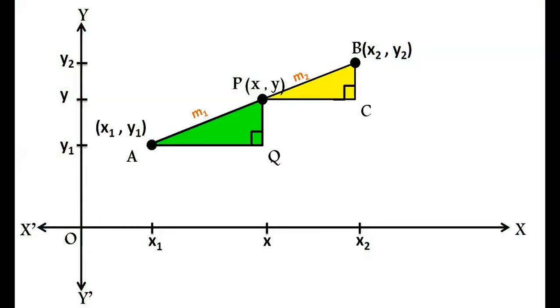Here we have triangles PAQ and BPC. In these triangles, angle Q equals angle C, each 90 degrees, and angle A equals angle P since AQ is parallel to PC and AB is a transversal. They form corresponding angles which are equal. Therefore, triangle PAQ is similar to triangle BPC by AA similarity.